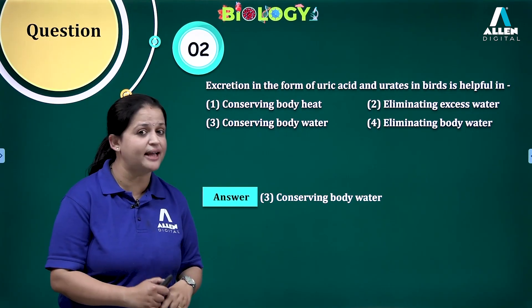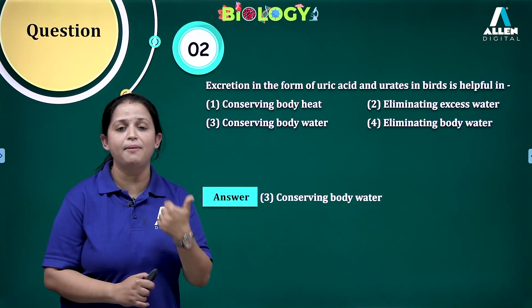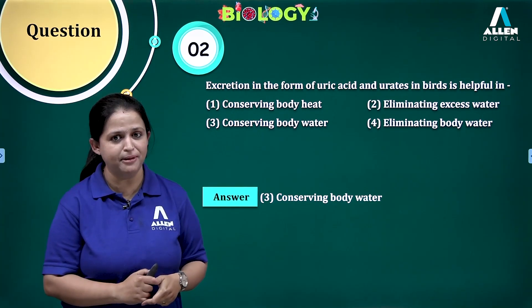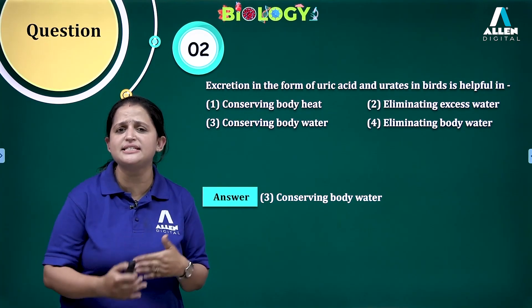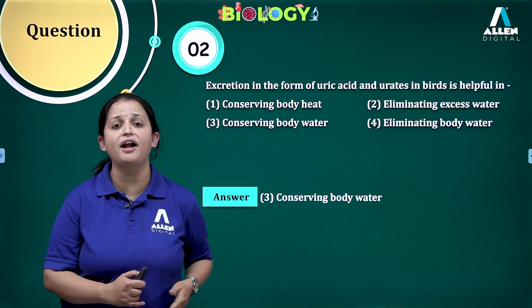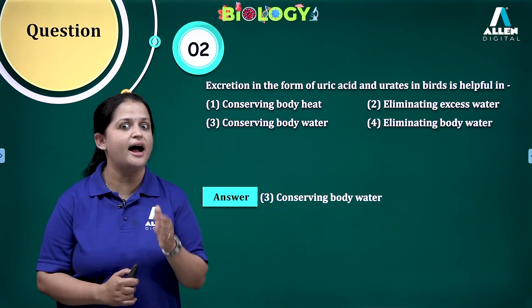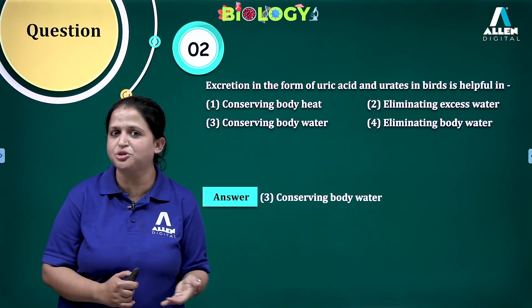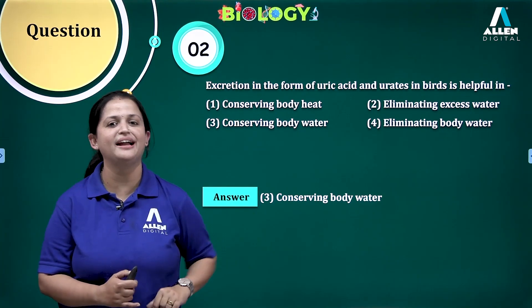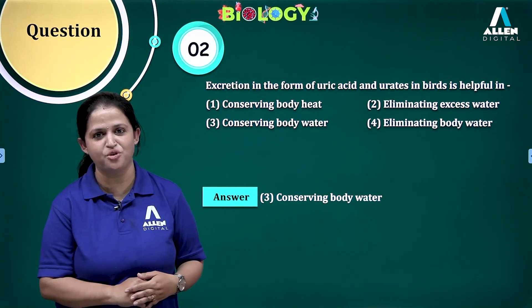So there are three types of animals in nature: ammonotelic, ureotelic, and uricotelic. Different excretory organs are found in different animals. For example, malpighian tubules are the excretory structure in insects, and in crustaceans — though they are arthropods — because of the change in habitat, we can find different excretory organs. These are the concepts covered so far. Thank you all.